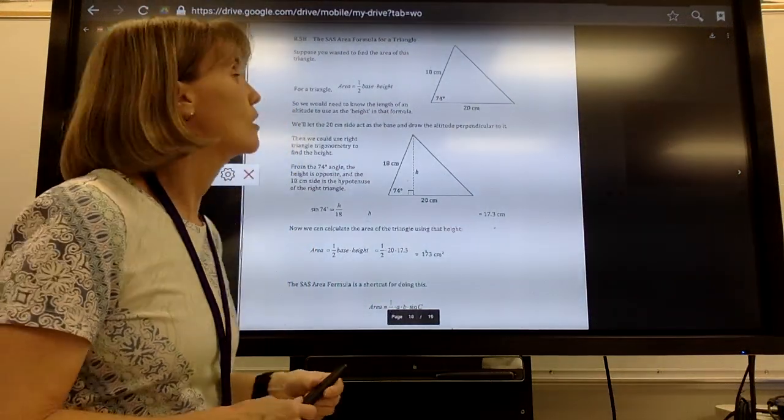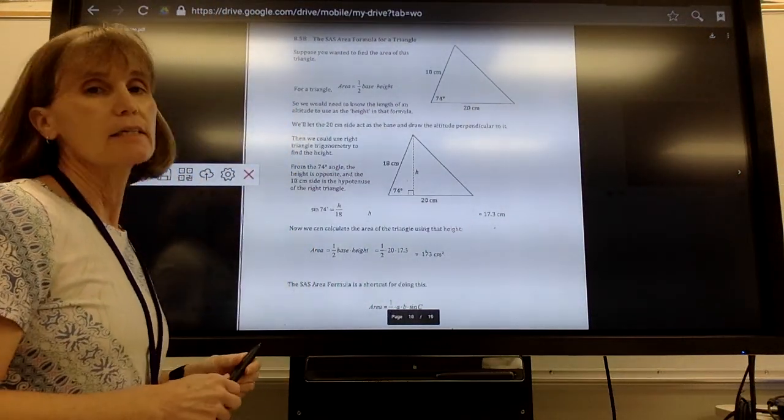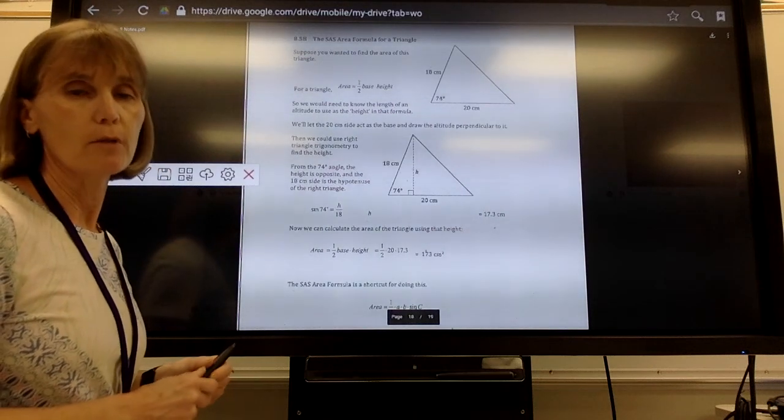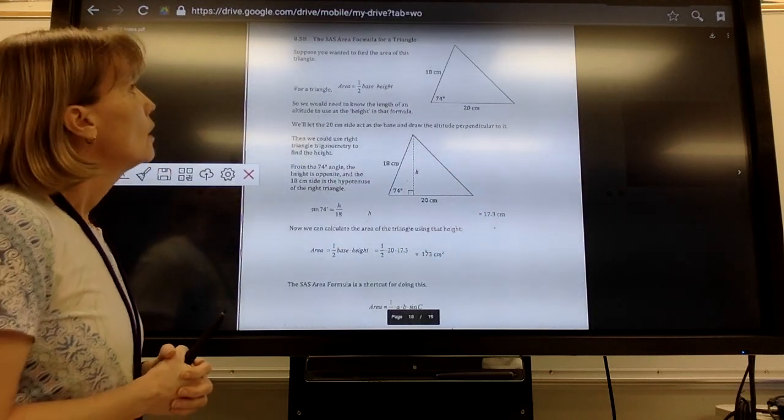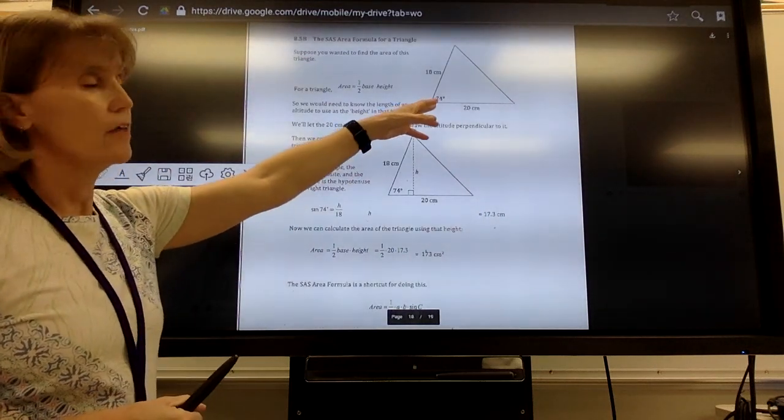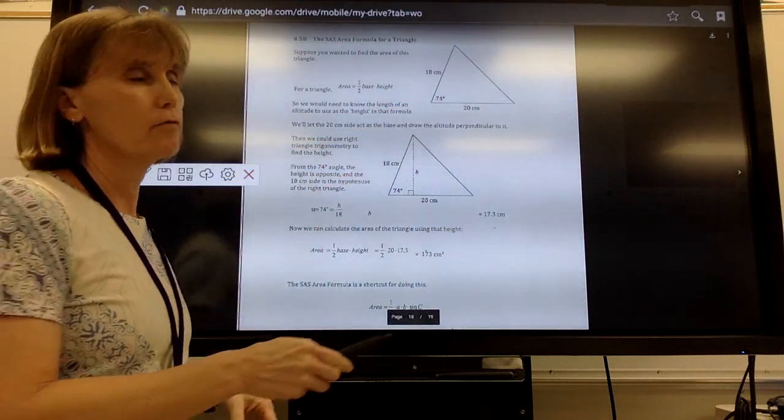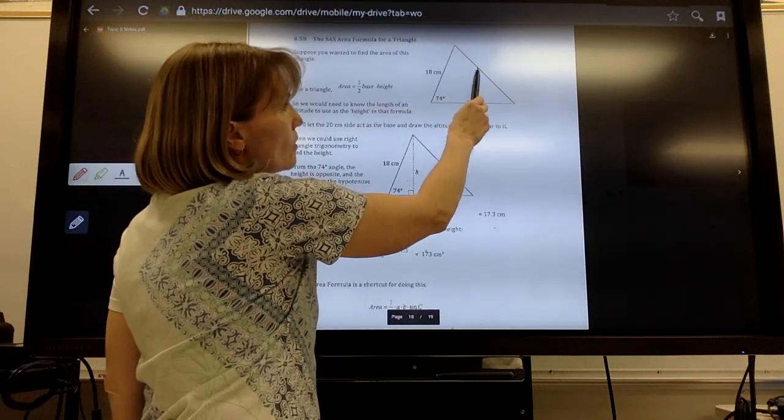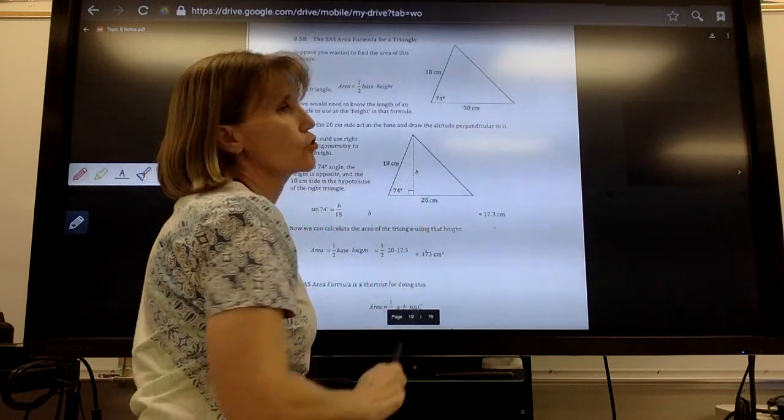The last section for Chapter 8 talks about the SAS area formula for a triangle. Suppose you wanted to find the area of this triangle, and recall that area is finding the area inside of the triangle.